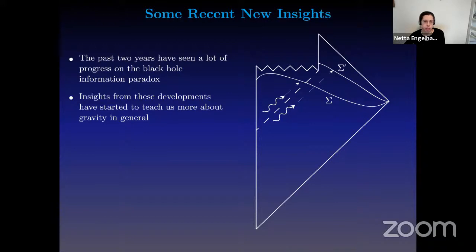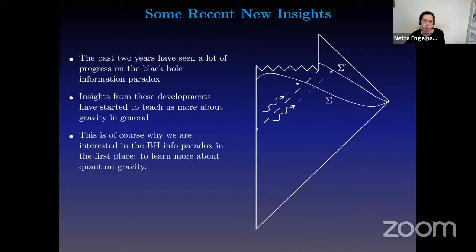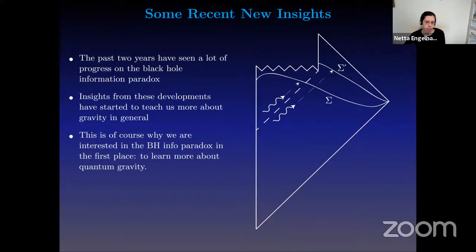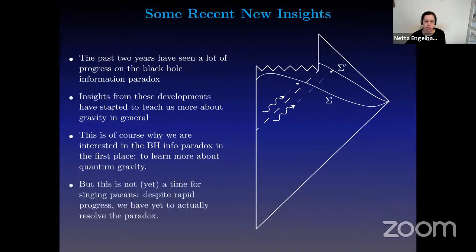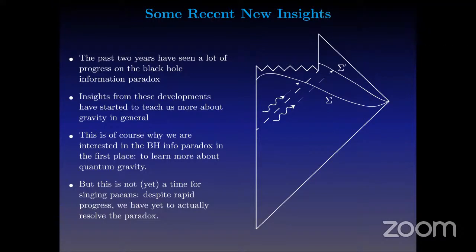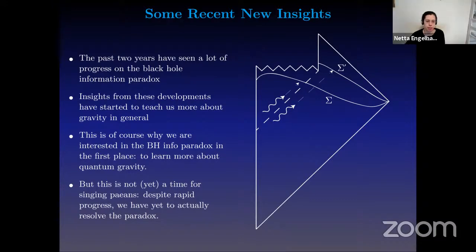All of that has been very exciting, partly because this is why we're interested in the black hole information paradox in the first place — to learn more about quantum gravity. We can certainly get a lot of mileage out of the developments so far, such as computing the page curve. But the fact remains that despite very rapid progress, we haven't yet resolved the paradox. And as a spoiler, I will not be resolving the paradox in this talk either. But this is something important to work towards: to actually resolve the black hole information paradox.